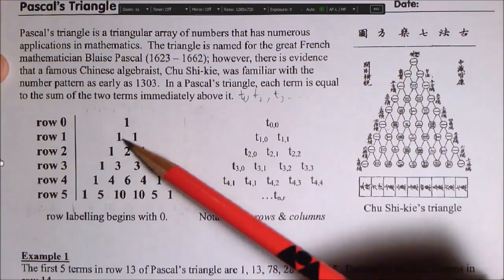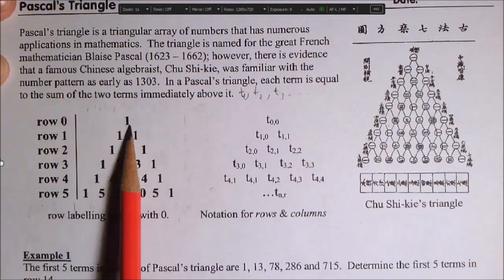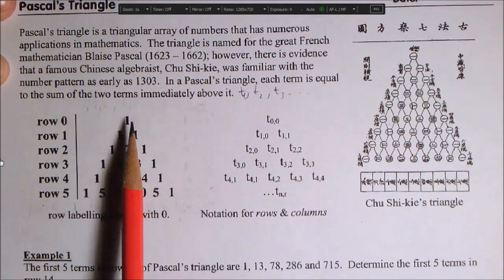So this is row 0. This is row 1, row 2, row 3, row 4, row 5. And then, within each row, the position of the term starts, we start counting at 0.